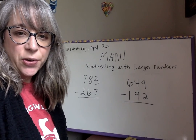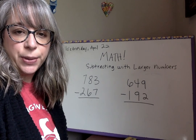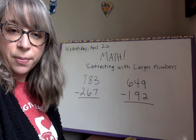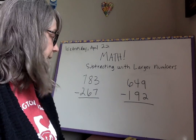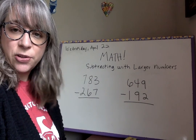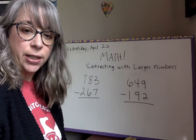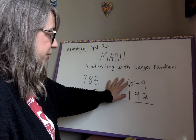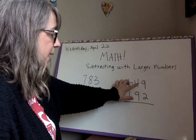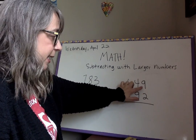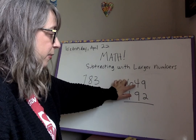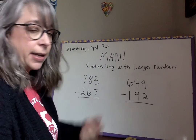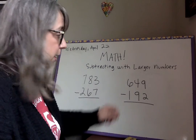Hello Washington Eagles, it is Wednesday April 22nd and we are subtracting with larger numbers and we're going to be regrouping. Let's get started. The first thing I like to do is just look at my problem. Nine minus two is fine, but our four is smaller than our nine so we're going to have to regroup.